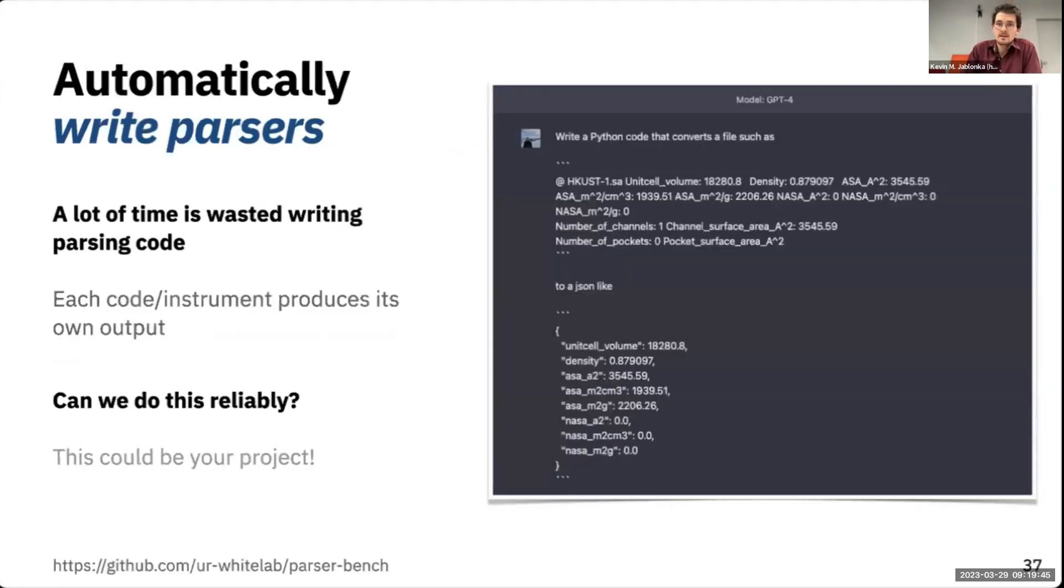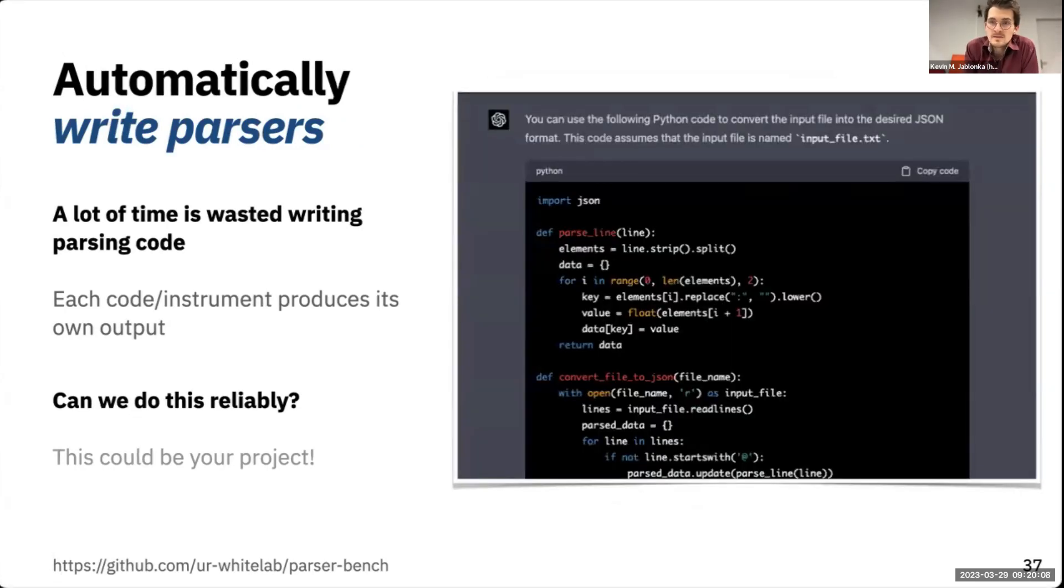You might have different input files or output files produced by your software or instruments. In this case, you might have an output file from a simulation program. You might get out some JSON file. Can you write a parser, can models write parsers for you - Python scripts that can parse those output files - and can they do this reliably and how well do they perform? If you want to do this, there's also a repo on Andrew's GitHub where we have already some parsers with output files so you can try out.